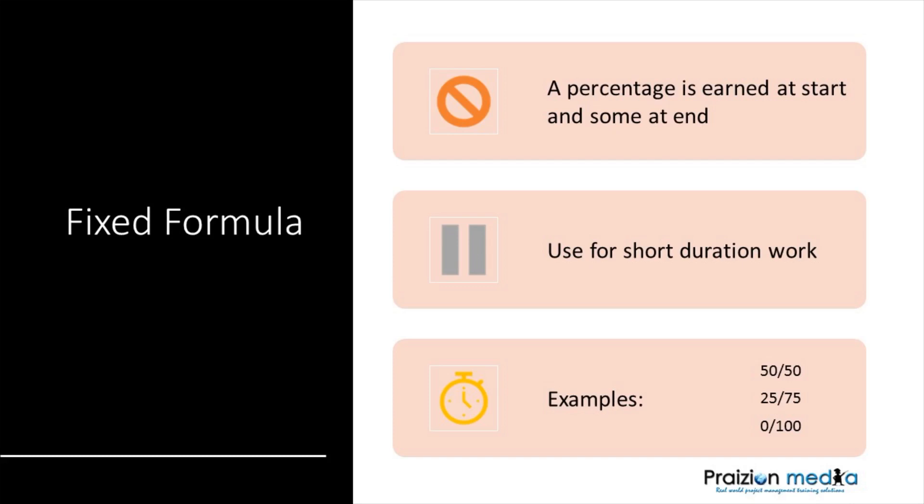Some people get a little bit creative with it, but typically you would see fixed formula used in a 50-50 split. You get 50% when you start the task and the remaining 50% when you end — it's called 50-50. Or we have the 25-75: 25% of the value is received when you start and the remaining 75% when you end. These are typical methods for, as the PMI puts it, small and short duration work.